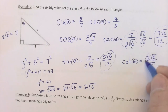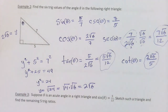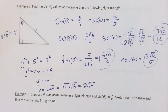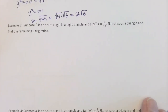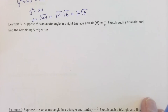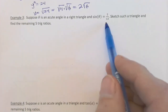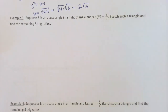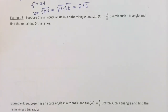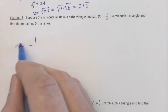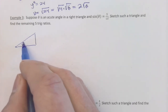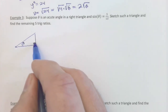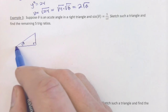Example three: suppose theta is an acute angle in a right triangle and sin(θ) = 5/13. Sketch such a triangle and find the remaining trig ratios. The idea is there's more than one triangle that gives sin = 5/13 — you could use 5 and 13, or 10 and 26, and so on. Place theta at the lower left corner with the right angle at the lower right, and set the opposite leg = 5 and hypotenuse = 13.